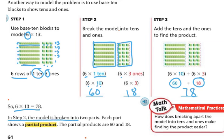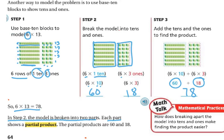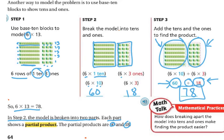In step 2, the model is broken down into two parts. Each part shows a partial product and the partial products were 60 and 18 because basically we did the multiplication for this half, the multiplication for this half. This is a partial product, that's a partial product. Then I take both partial products and I add them together and I get my exact answer.